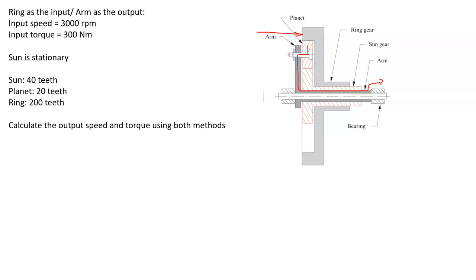We have the ring as the input, the arm as the output, and we've got an input speed of 3,000 rpm and 300 Newton meters of torque coming in. The Sun gear is stationary. They give us a setup where the Sun has 40 teeth, the planet has 20 teeth, and the ring has 200 teeth. The ratio of teeth is a little extreme but we can still do the math.